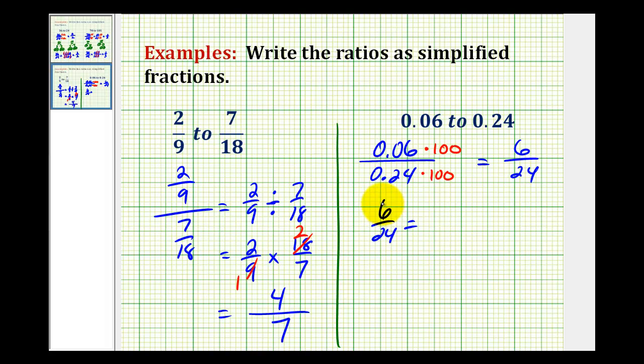The greatest common factor between 6 and 24 is 6. Just to show it, I'll write 6 as 1 times 6, and I'll write 24 as 4 times 6. So we can actually see the greatest common factor of 6 would simplify out. And so we're left with the simplified fraction of 1/4.